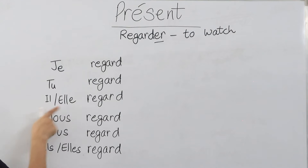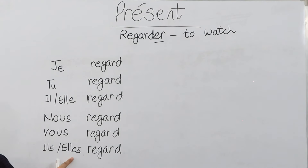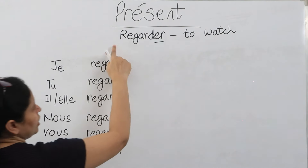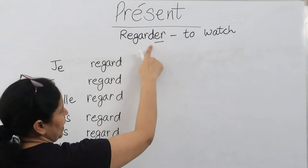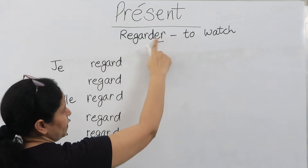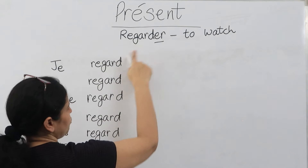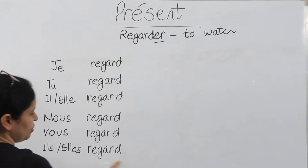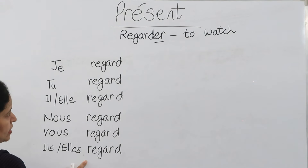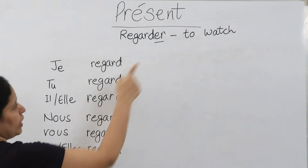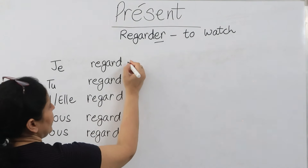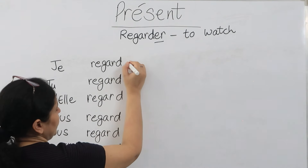Je, tu, il, elle, nous, vous, ils, elles. We'll use the leftover spellings. After dropping -er, we are left with these spellings which I have written as the stem. Now at last, we'll put the endings.